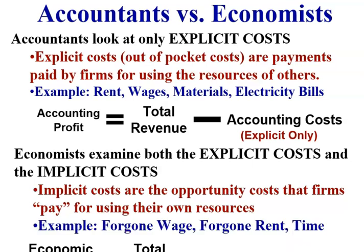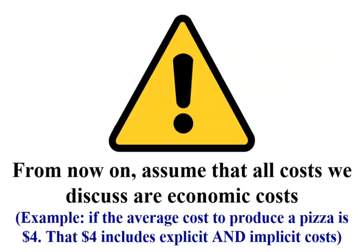Examples of implicit costs are foregone wages, foregone rent, and time. From this point on, assume that all costs we discuss are economic costs.